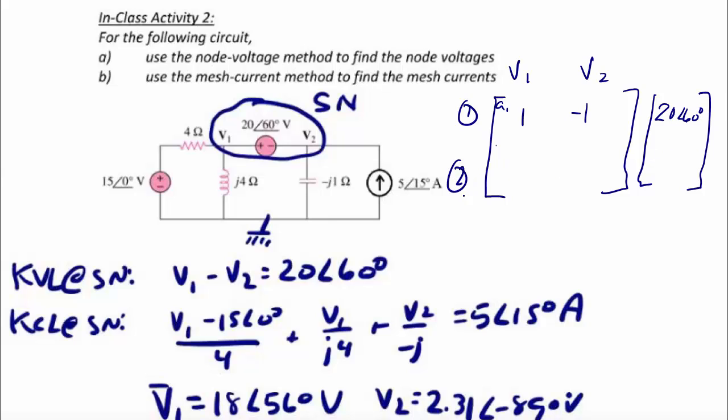For the second equation, the coefficients on V1 are 1 over 4 plus 1 over J4, and the coefficients on V2 is 1 over negative J. And the constant moved to the other side of the equal sign is 5 with an angle of 15 degrees plus 15 over 4.